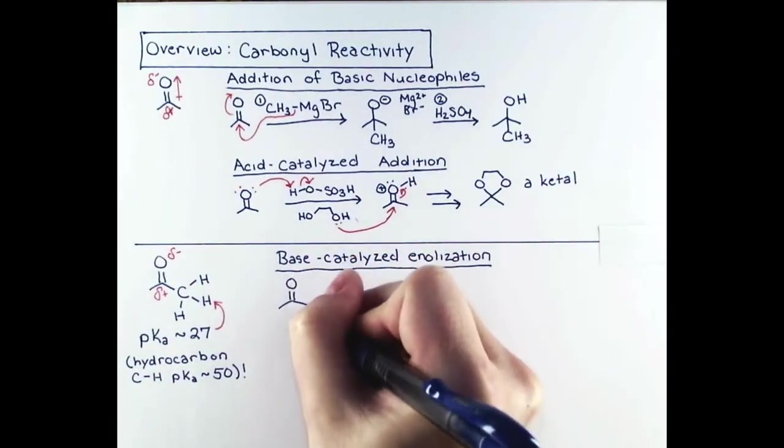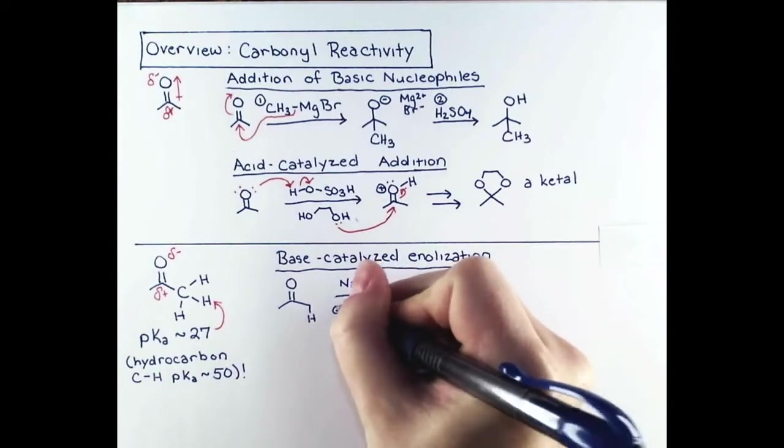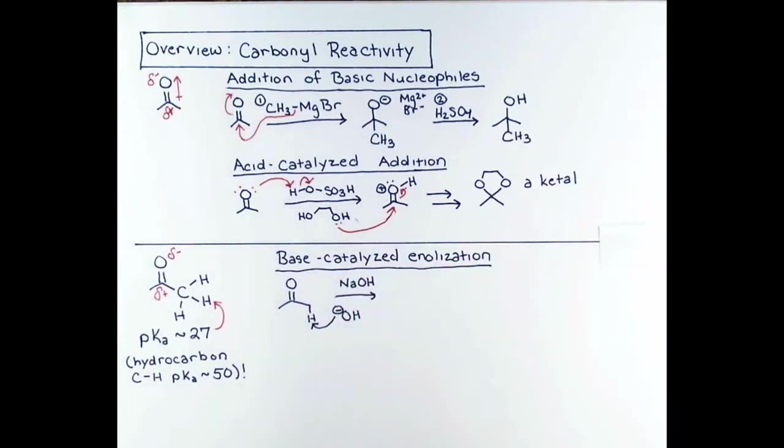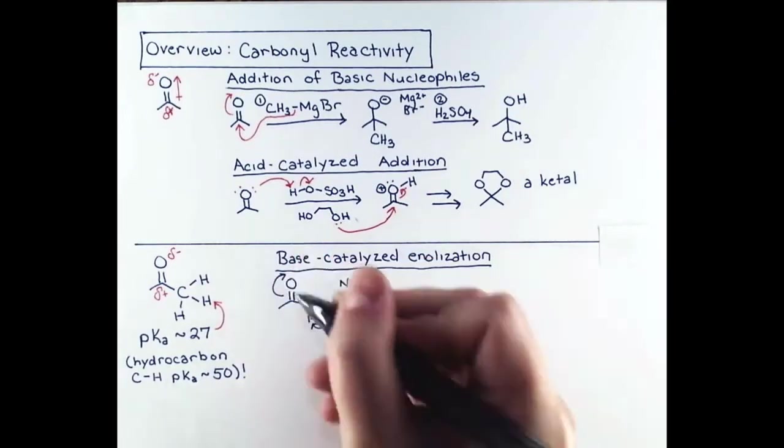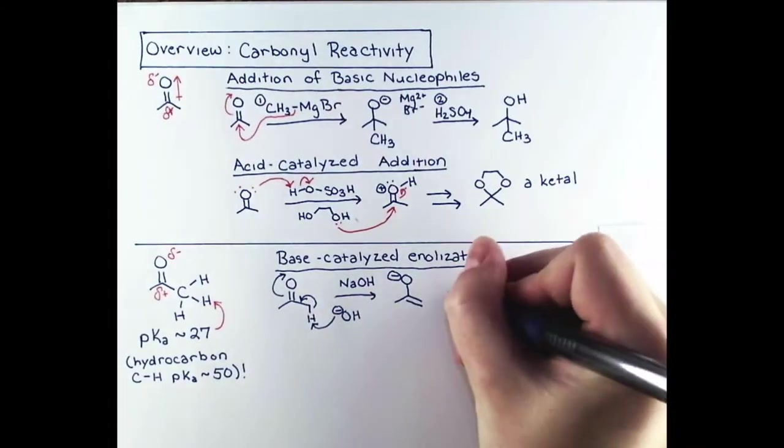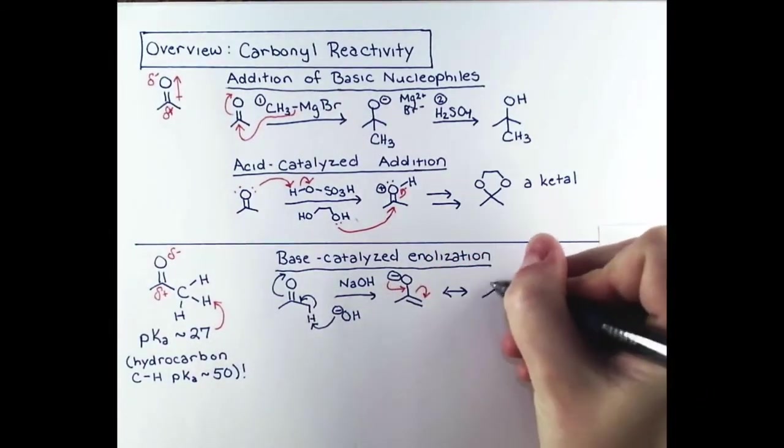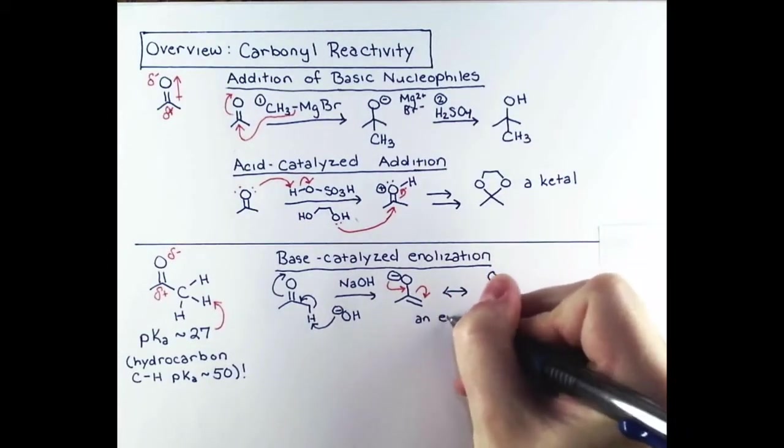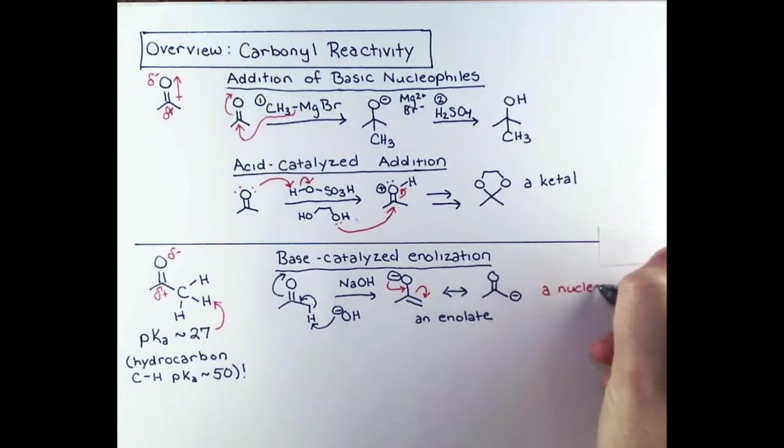The acidity of the alpha protons allows them to be deprotonated. Sodium hydroxide can attack the acidic proton, and we push electrons all the way through the carbonyl to show how formation of the anion is stabilized by conjugation. There is another resonance form that puts a negative charge on carbon. So an enolate is a carbon nucleophile. We went from a compound that undergoes nucleophilic attack to something that can do the attacking.